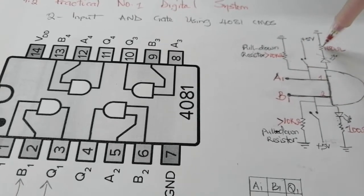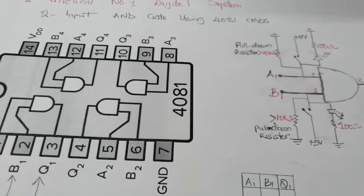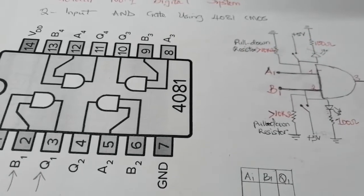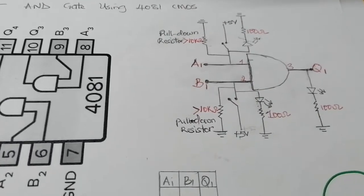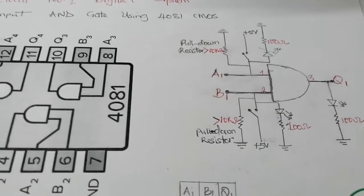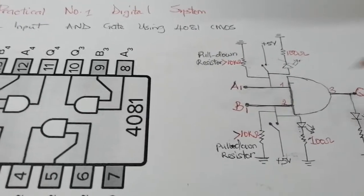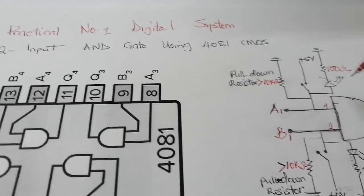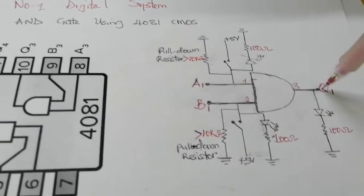Depending on the value of the resistor, if you don't connect the pull-down resistor, you might get an output without any input. To solve that problem, we use a pull-down resistor. There is also a pull-up resistor, but in this case we're using pull-down so we don't get a spurious output. The value should be greater than 10 kilo-ohms, so the initial state will be zero.